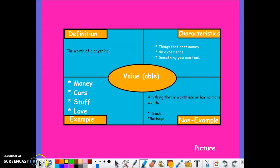The next vocabulary word is value. Anything that has value or is valuable is worth something. Some characteristics would be things that cost money or an experience that you can feel. Examples of things that are valuable would be money, cars, stuff, or love.